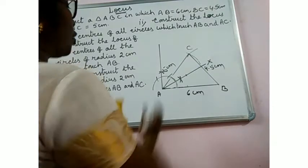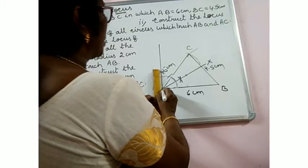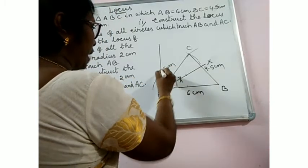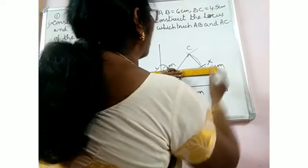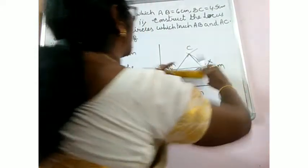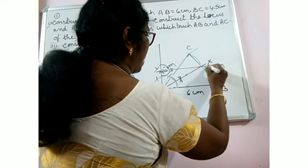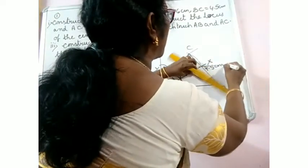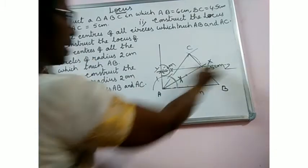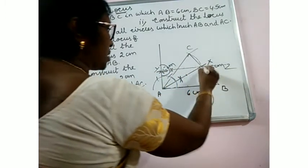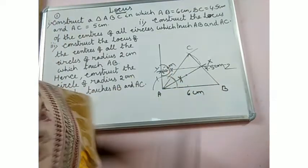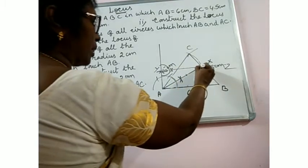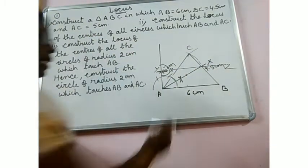From here let us give an arc of 2cm. Let us name this Y. Again, construct a 90-degree angle so that you will get the parallel line — the line parallel to AB at a distance of 2cm from AB. We can produce it as well. Let us name this line YZ. So for the third part, YZ is the required locus. Every point on YZ is 2cm from AB, so if you take any point on YZ as the center of a circle with radius 2cm, it will touch AB.